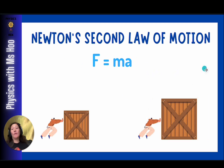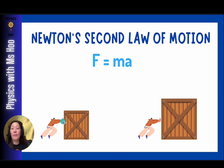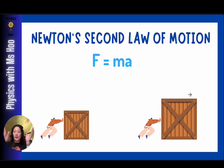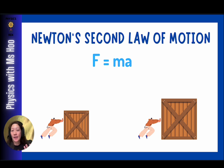On the flip side, if you change the mass, that will change the acceleration. If you apply the same amount of force to two objects with very different masses, the object with greater mass will move with lesser acceleration. You can see this clearly from the formula.